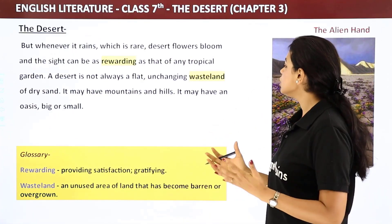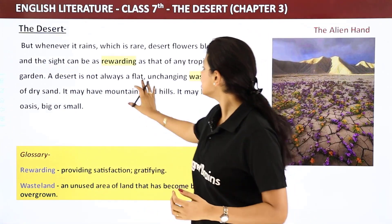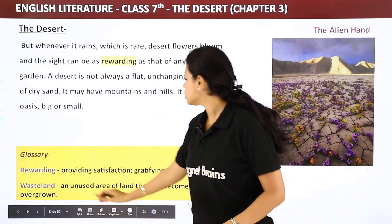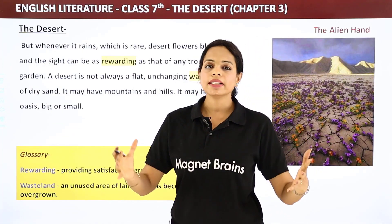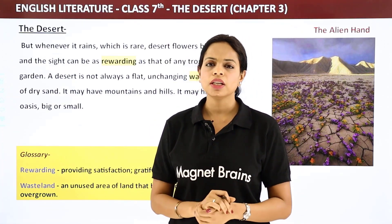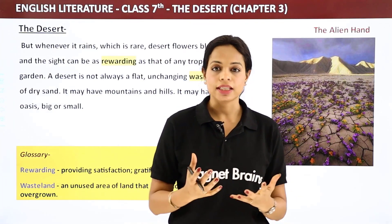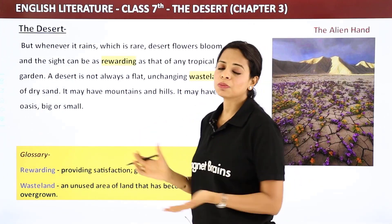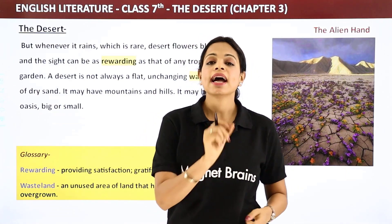A desert is not always a flat, unchanging wasteland of dry sand. Wasteland ka matlab hota hai — an unused area of land that has become barren or overgrown. A desert is not always a wasteland as we imagine. It may have mountains and hills, it may have an oasis big or small. It can have a lot of beautiful trees and it can have an oasis.